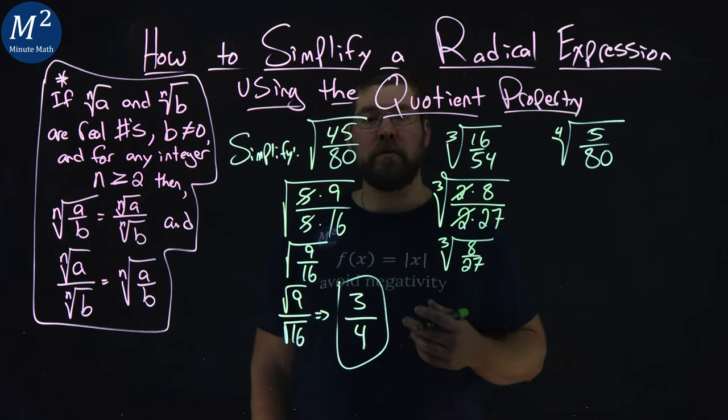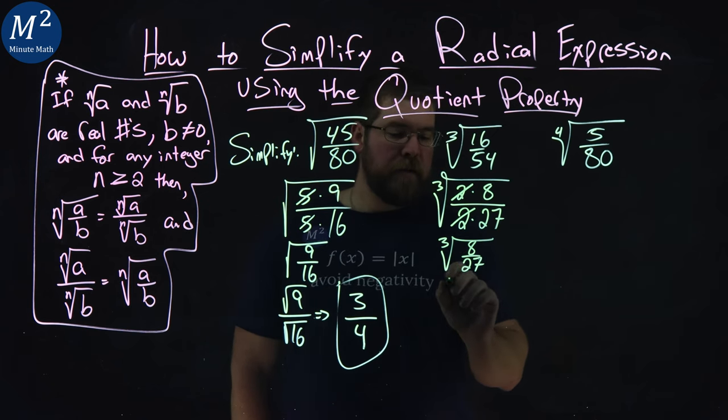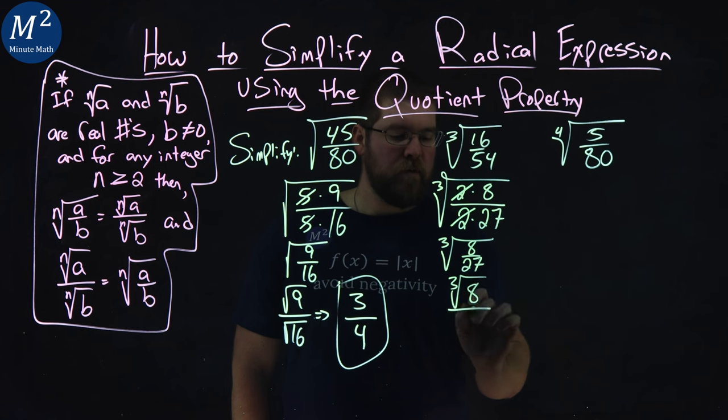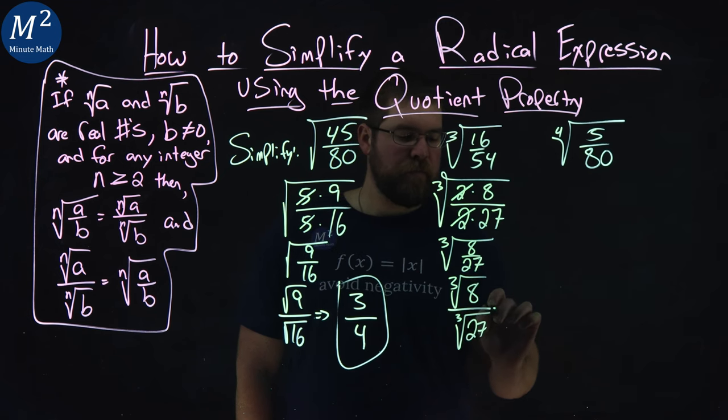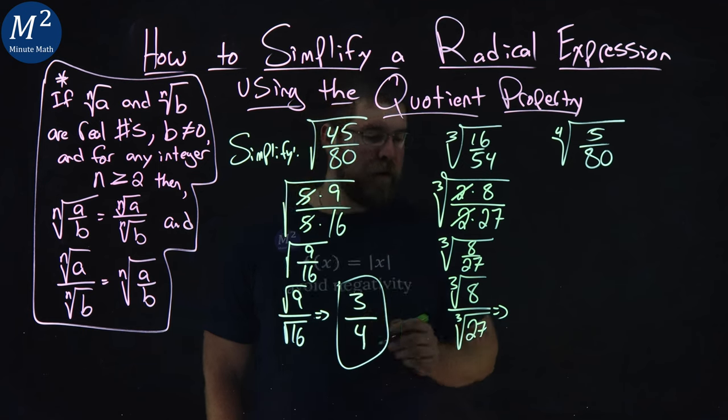So now we have the third root of 8 over 27 left over. We can apply our quotient property and we can take the third root of 8 over the third root of 27.